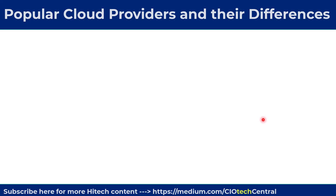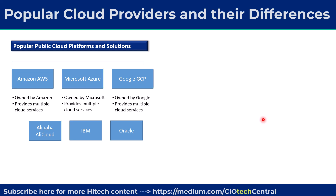In this slide, we will review the popular hyperscalers or CSPs in the cloud computing market. As most of us know, the major players in the market are AWS from Amazon, Azure from Microsoft, and GCP from Google.